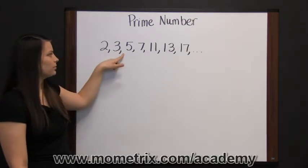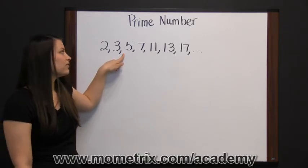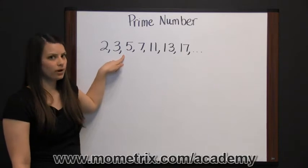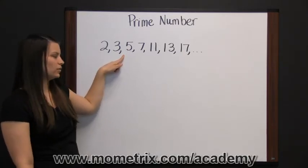Notice also we're missing the number four. Four is not a prime number because it can be divided by one, two, and four. So it can't only be divided by itself and one.